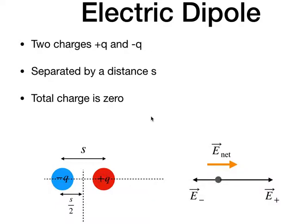What is an electric dipole and how do you calculate the electric field? An electric dipole is when you have two charges of equal and opposite value: plus Q and minus Q, separated by some distance s. The total charge of this dipole is zero because the positive Q and negative Q cancel.